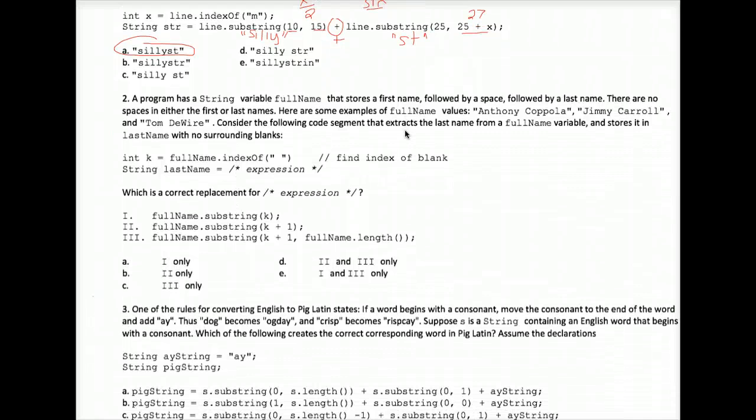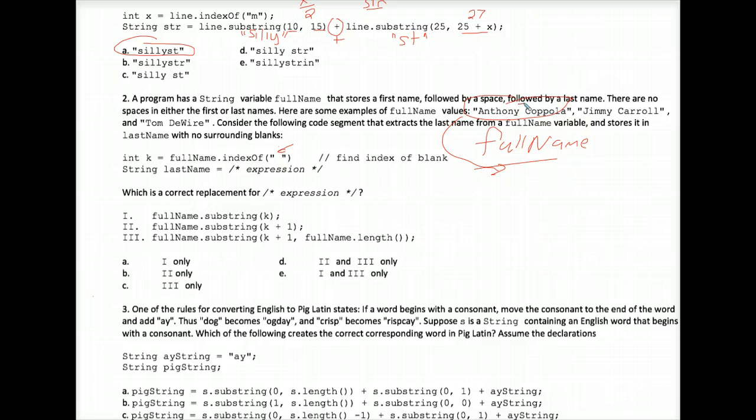Moving on to number 2 here. They sometimes give you an example, and they did here some guy named Anthony Coppola. So let's pretend that full name is, the variable full name is Anthony Coppola. K is the occurrence, the position of the occurrence of the first blank space. And the first blank space here, I'll just count out loud. Zero, one, two, three, four, five, six, seven. That space is in position seven. So that's what's being stored in K. I like to trace code very carefully and accurately here.